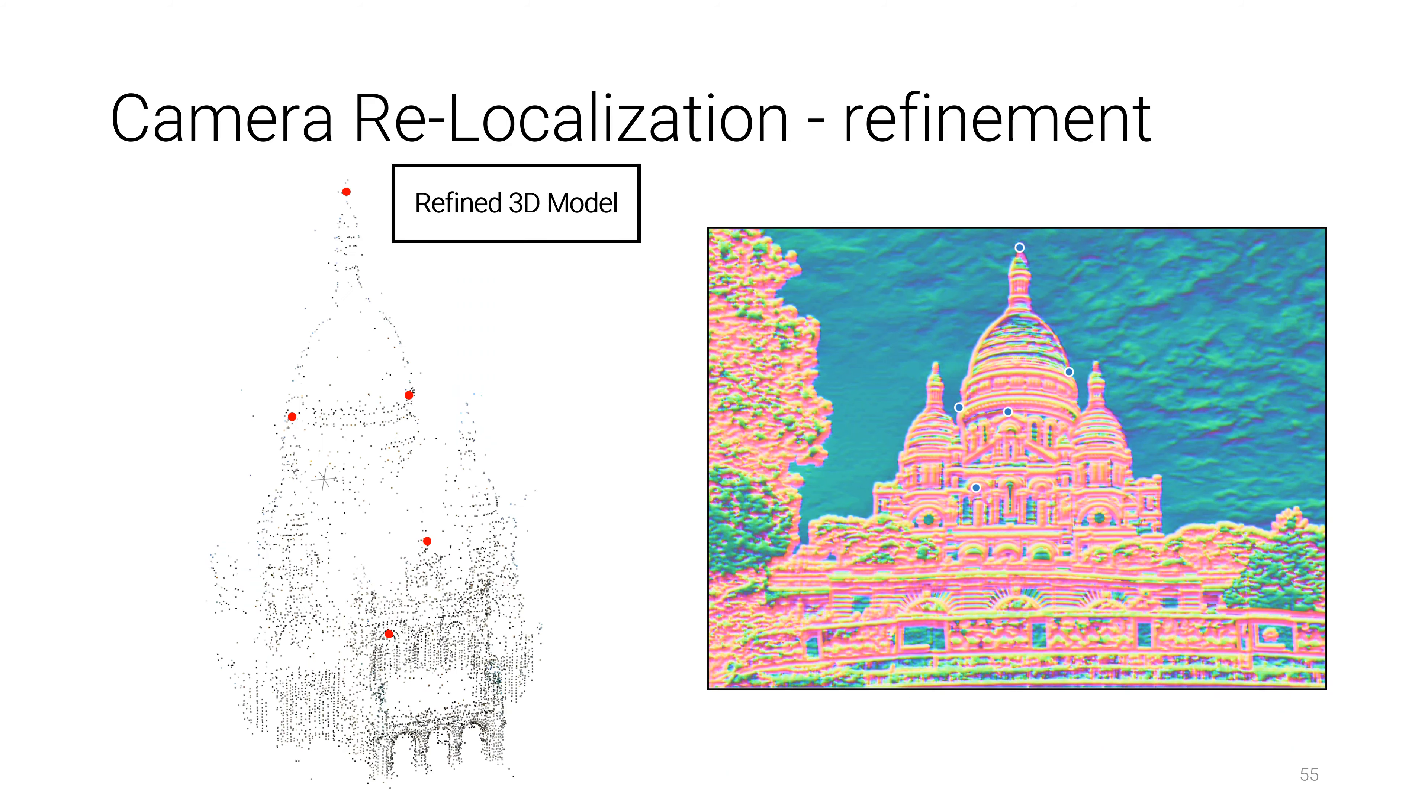We also compare our method in camera relocalization and propose a featuremetric refinement strategy. After finding 2D-3D correspondences, we extract the reference descriptor for each 3D point and refine the keypoints in the query image by minimizing the featuremetric error to the reference.